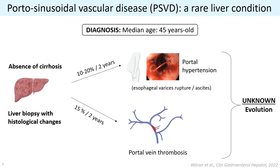Portosinusoidal vascular disease, or PSVD, is a rare liver disorder characterized by the involvement of altered intrahepatic vessels at the level of the sinusoidal and the portal venule in the absence of cirrhosis. A diagnosis requires liver biopsy to characterize different histological changes, such as nodular regenerative hyperplasia, incomplete septal fibrosis, and obliterative portal venopathy. It affects young patients with a median age of 45 years old, and currently its evolution is unknown.